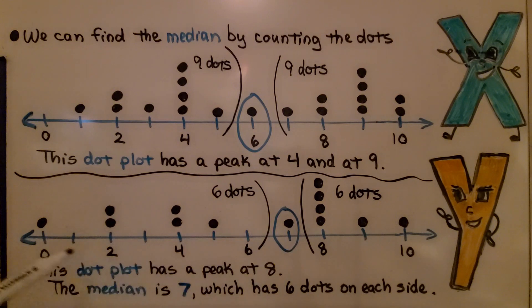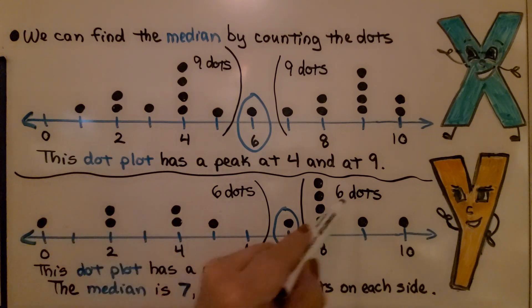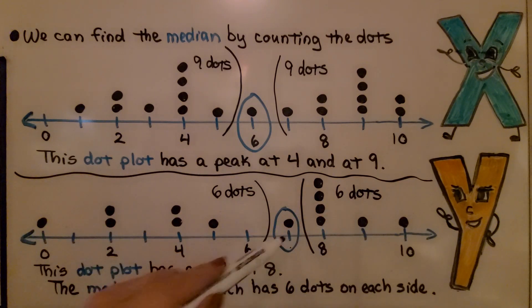It's skip counting by two, as we know that's seven. We have six dots on this side, and we have six dots on this side. The median is seven.